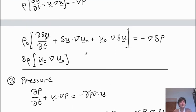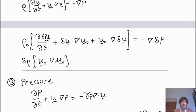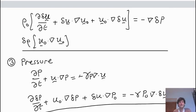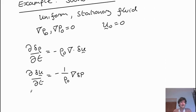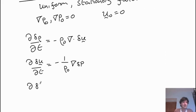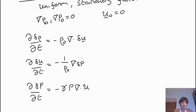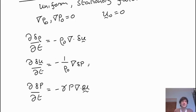In the momentum equation, because u₀ = 0, all those terms vanish and the only term left is ρ₀ d(δu)/dt = −∇(δp). For the pressure equation, the same simplification gives d(δp)/dt = −γp₀∇·(δu). So all three equations simplify to just the compression terms: changes in pressure and density driven by changes in the fluid flow.